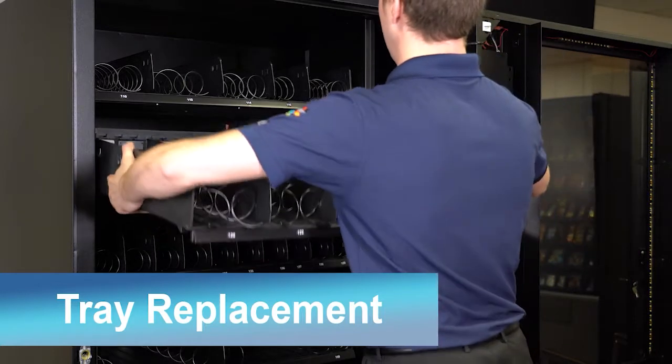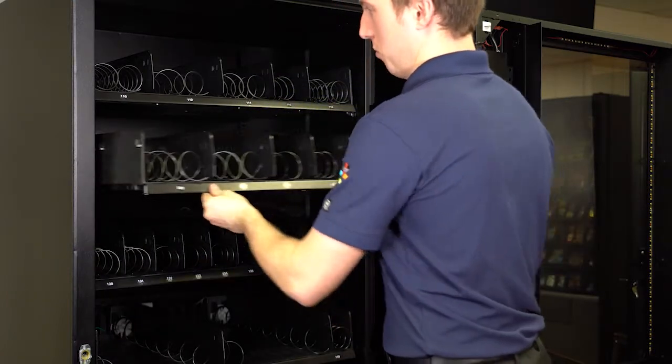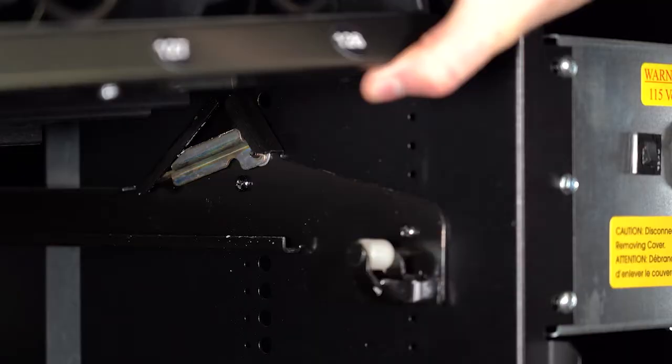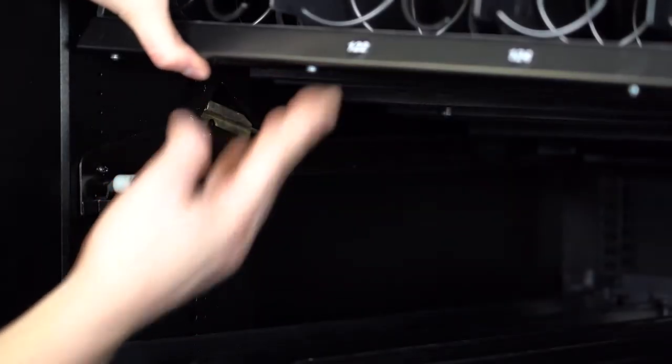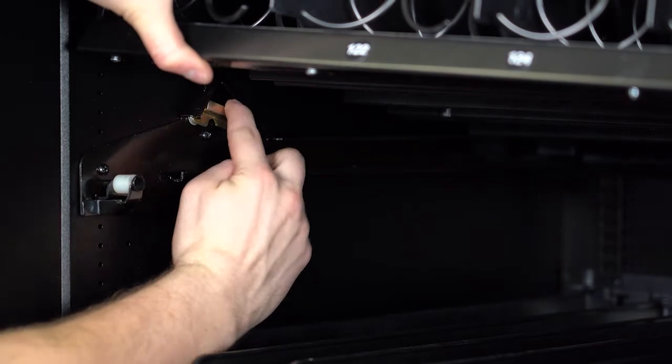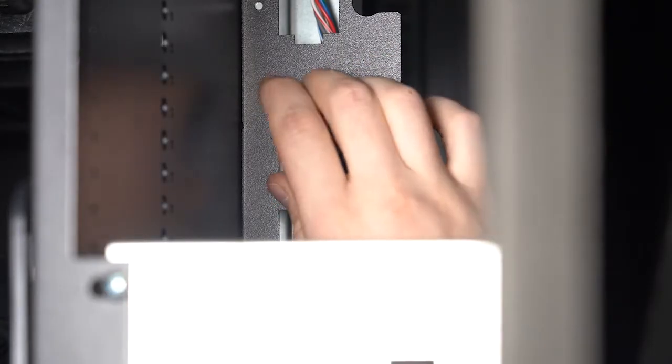When placing the tray back in the machine, make sure the wheels are in line with the rails. After the tray is in the machine, lift up on the tray and push the tabs back down, securing the tray in place. Then plug the tray harness back in.